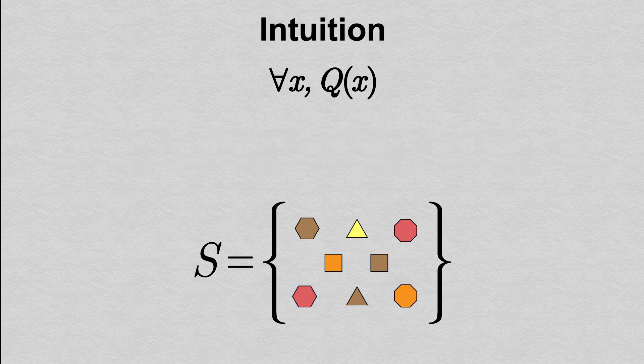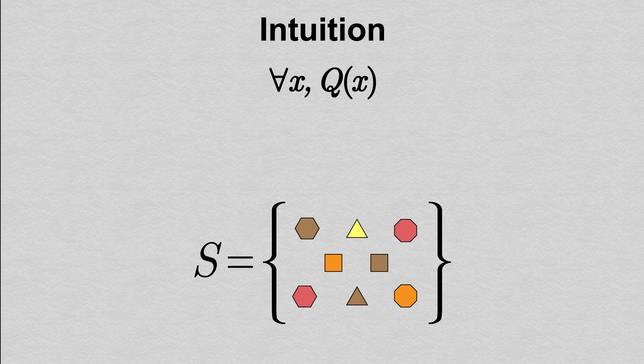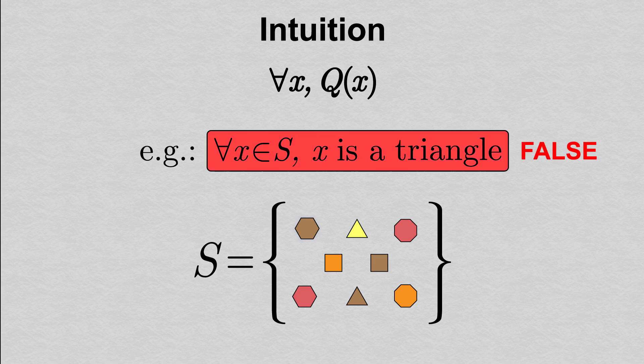Of course, not every for all statement is true. The statement that for all x in S, x is a triangle is a well-formed for all statement. It just happens to be false, which we can see because there's at least one shape in the set that's not a triangle.